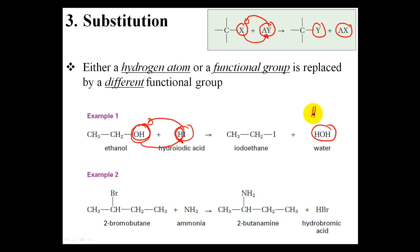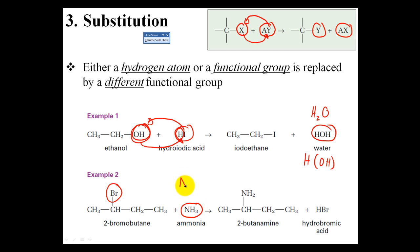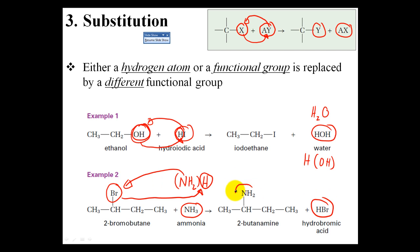Whether you write water as H₂O or HOH, it doesn't really matter, though it's preferable to write HOH just so you remember that the hydroxyl group pops out and joins the hydrogen to form water. Similarly, the bromine is being substituted by an NH₂ group. Ammonia can be represented as NH₂ with another hydrogen bonded to it, so the NH₂ substitutes the bromine, bromine takes the H to form HBr — hydrobromic acid — and the amino group is substituted in.